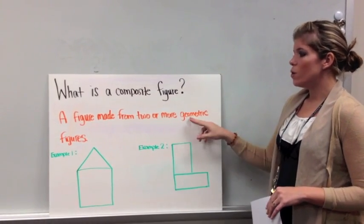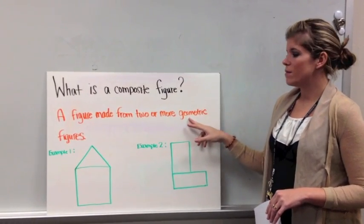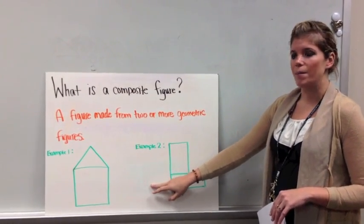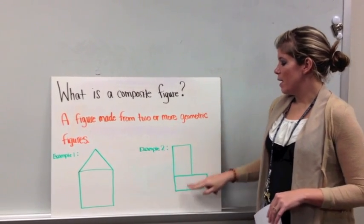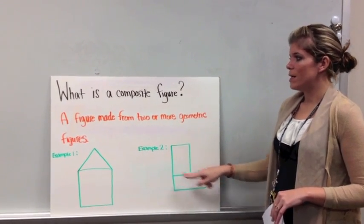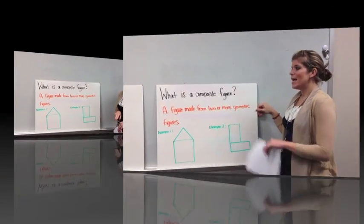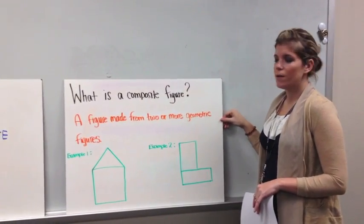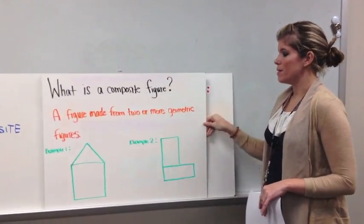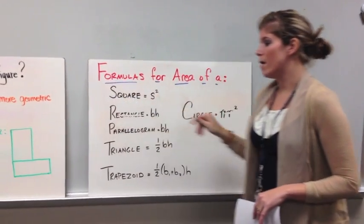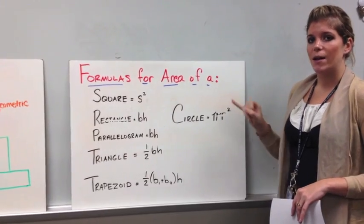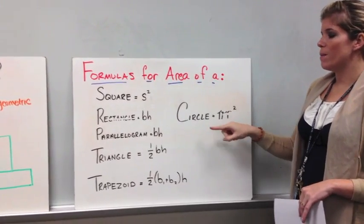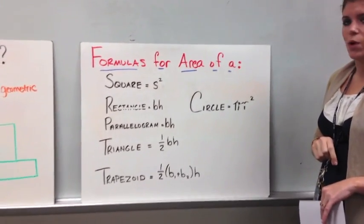It is a figure made up of two or more geometric figures, and I have two examples here at the bottom. I've got a square and a triangle added together here, and I've got two rectangles here. These are considered composite figures. To find the area of a composite figure, you're going to need several formulas. So you're going to take what you know about area of different figures, and you're going to use those formulas to find the area of a composite figure. Go ahead and pause the video, take a minute to write these formulas down.